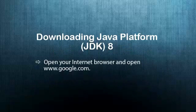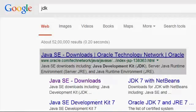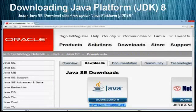Open your internet browser like Google Chrome, Internet Explorer, Mozilla Firefox, or any other browser. Open google.com and type JDK in the search box. As you can see the results, click on the first result. Now your download page is open.